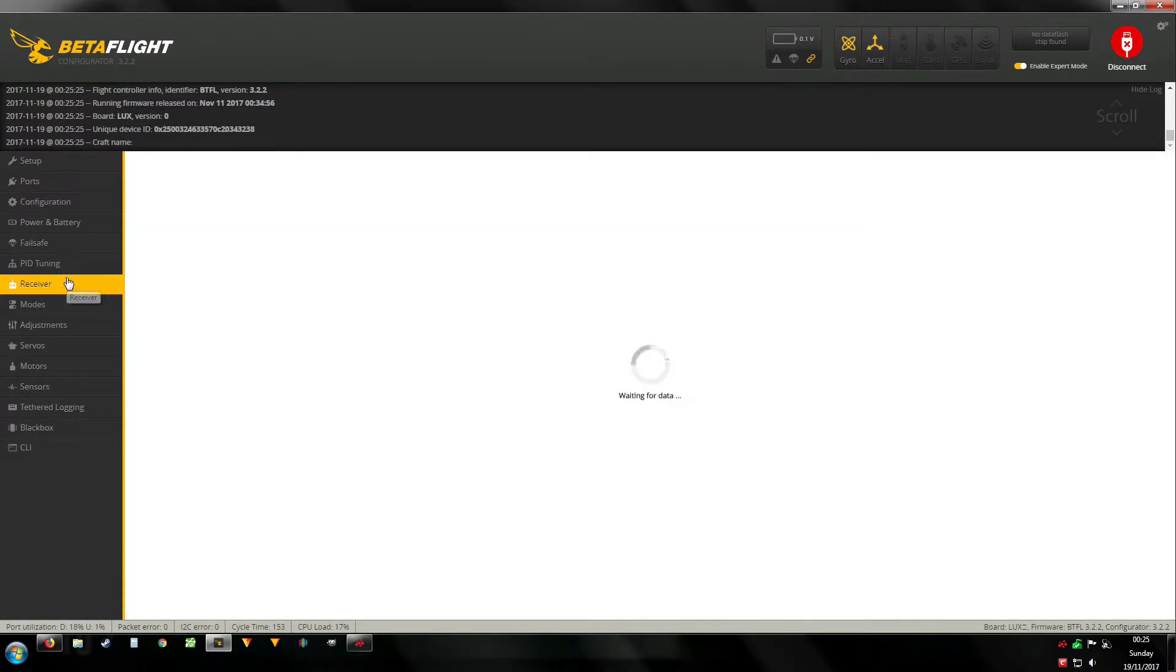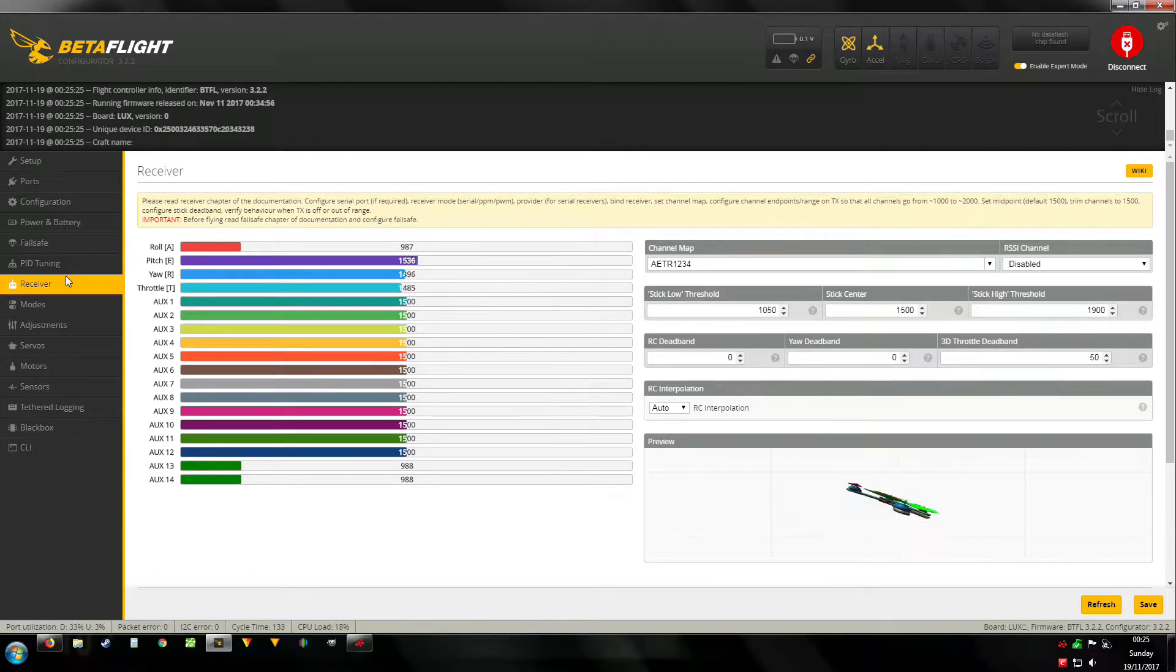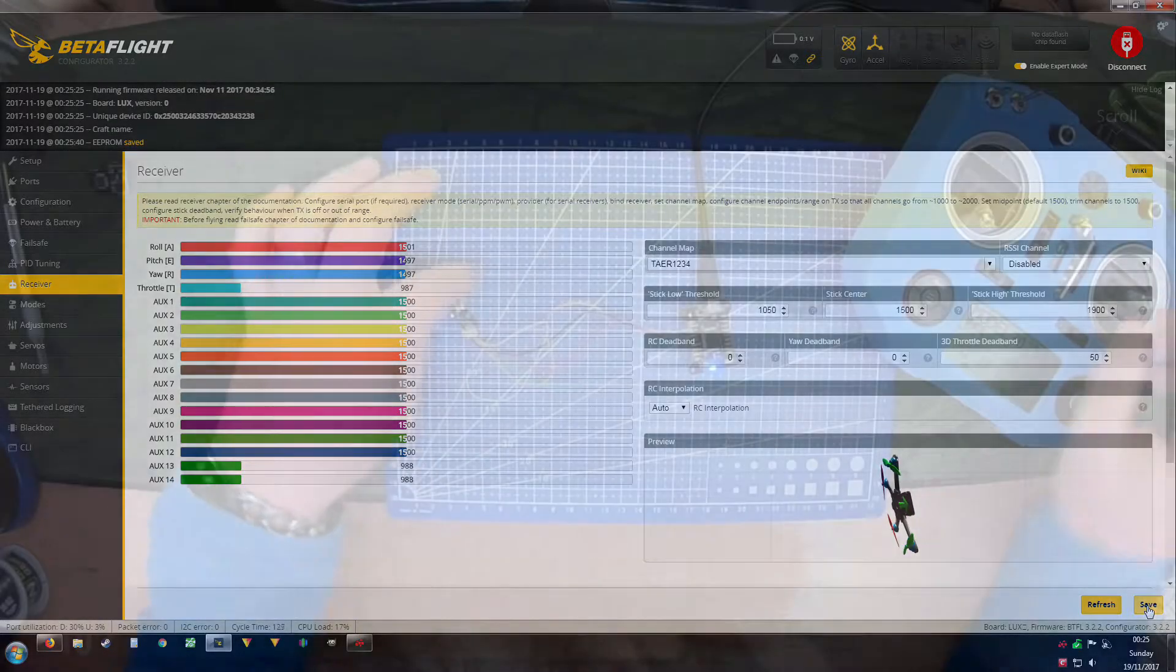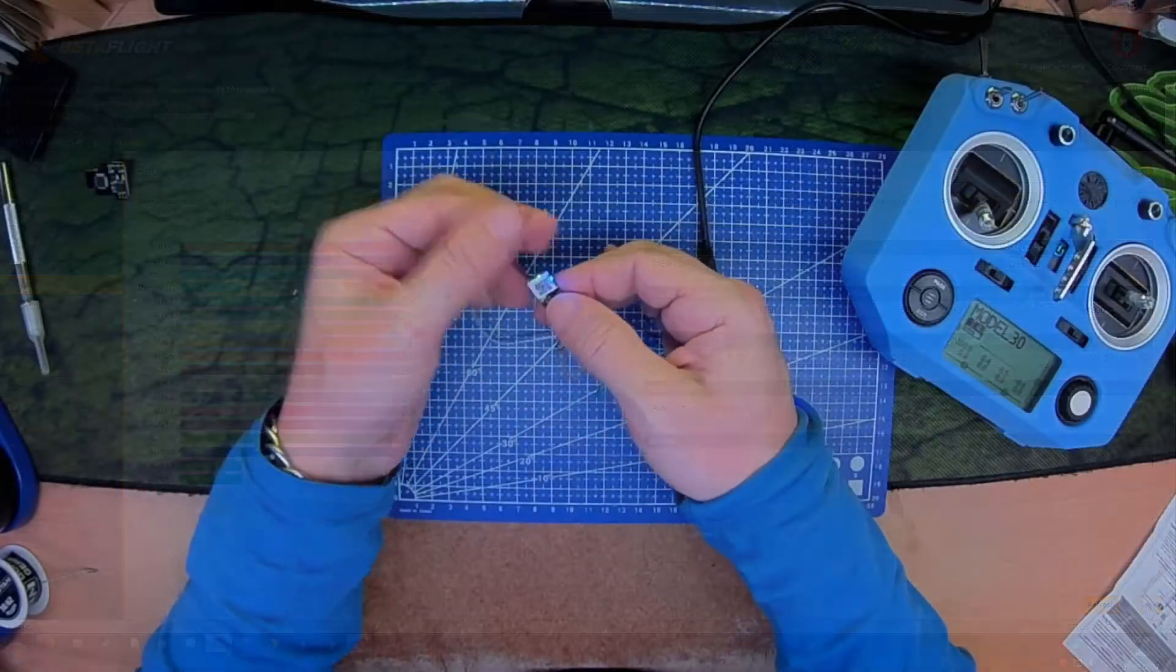Right then, fingers crossed. There we go. AETR, 1-up JR, 1-up TAER. All right. We now have international firmware on here.